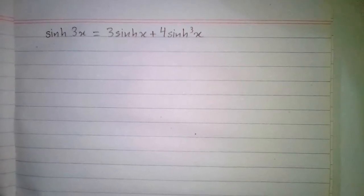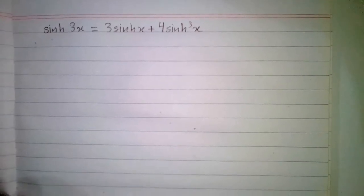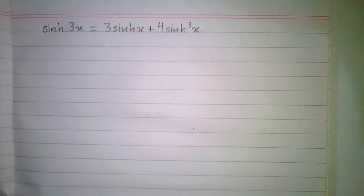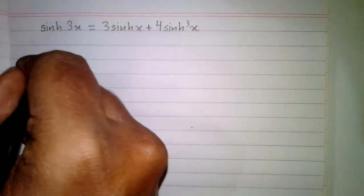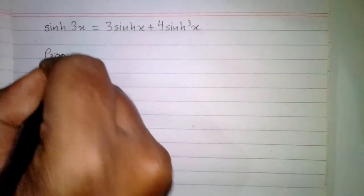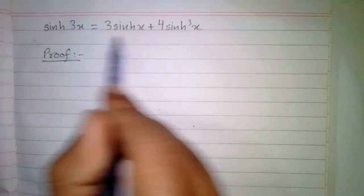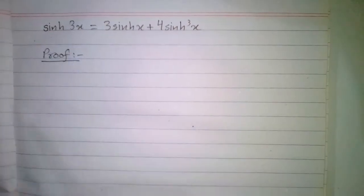In this video we will prove the hyperbolic trigonometric identity: hyperbolic sine of 3x is equal to 3 times hyperbolic sine of x plus 4 times hyperbolic sine cubed of x. We will take the right hand side of the identity and prove that it equals the left hand side.